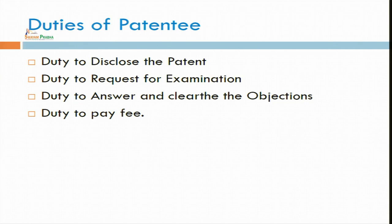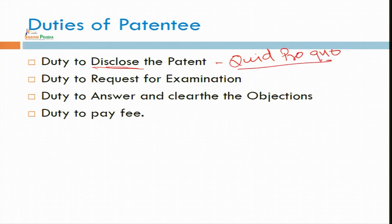There are some duties also, because rights and duties are there with the application of patent. Duty to disclose the patent — it is based on the principle of quid pro quo. Unless and until you do not disclose the patent, the patent will not be granted. Once your publication comes in the public domain, anyone can search that. But if anyone is using your patent commercially, then you can sue them.